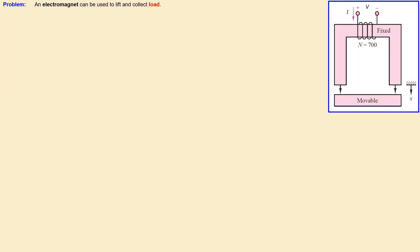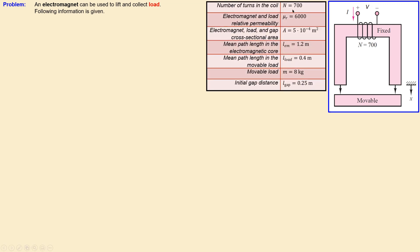We have the following situation. An electromagnet is used to lift or collect a load, which is actually given here in a schematic form. This is the movable part which is the load. This is the electromagnet, which includes a coil winding, and the core will create an electromagnet. The coil has a number of turns, and the electromagnet and load have a relative permeability value of 6000.